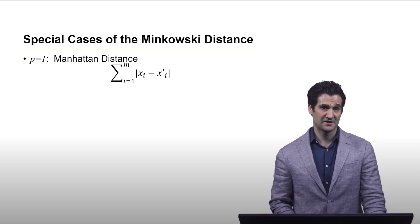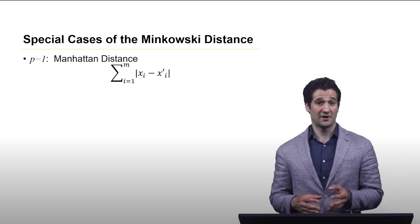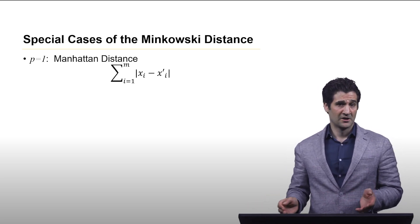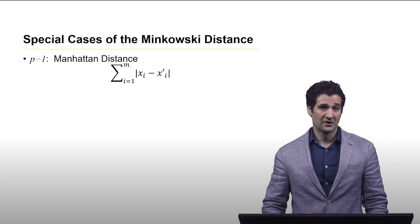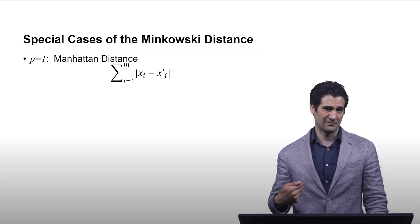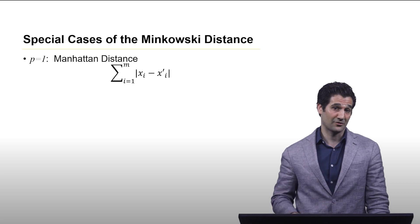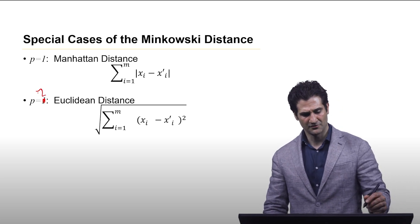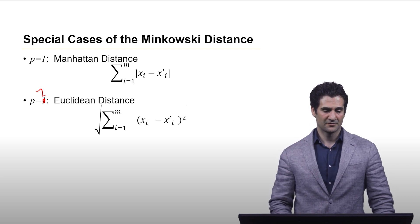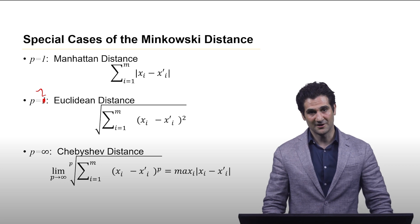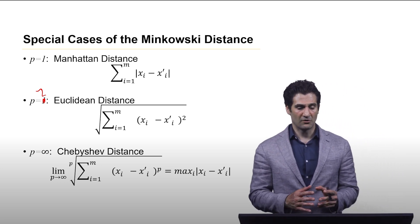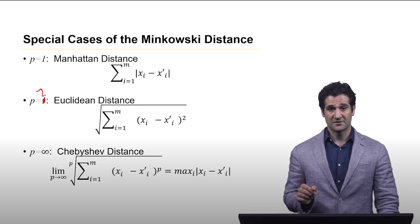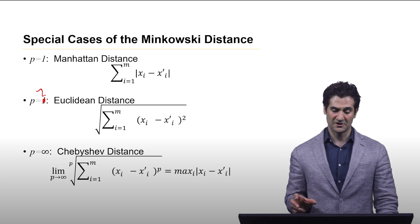First is p equals 1, called the Manhattan distance. Here we're just taking the sum of the absolute value of the difference between two points. It's called Manhattan distance because it can be thought of in a grid looking at all the x and y movements it takes to get from one point to another - like a taxi cab driving through Manhattan. P equals 2 is Euclidean distance, and p equals infinity (the limit as p goes to infinity) is called the Chebyshev distance, which looks at the maximum difference between the two points out of any of the features.